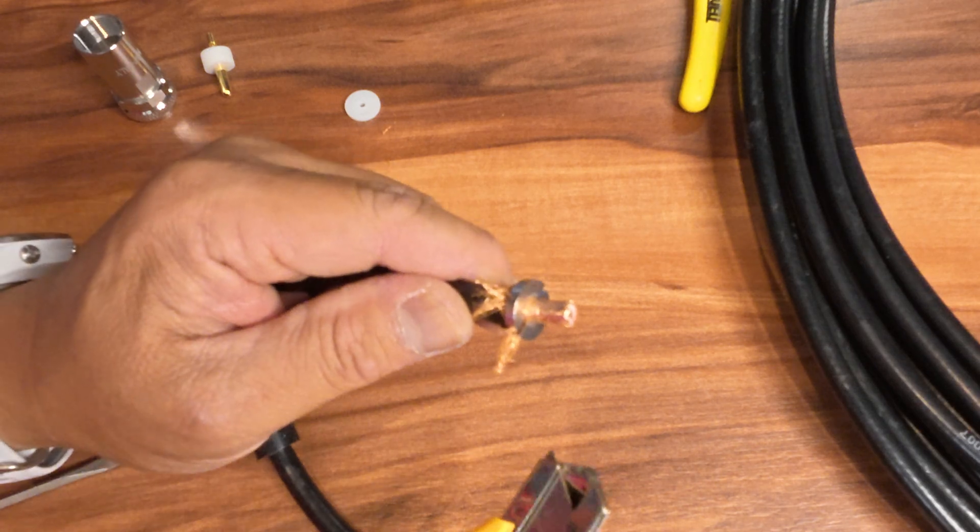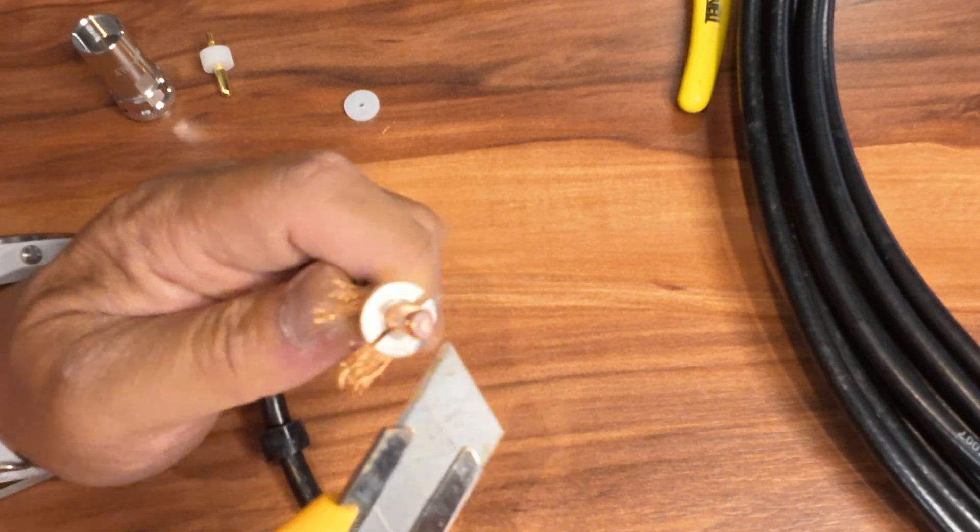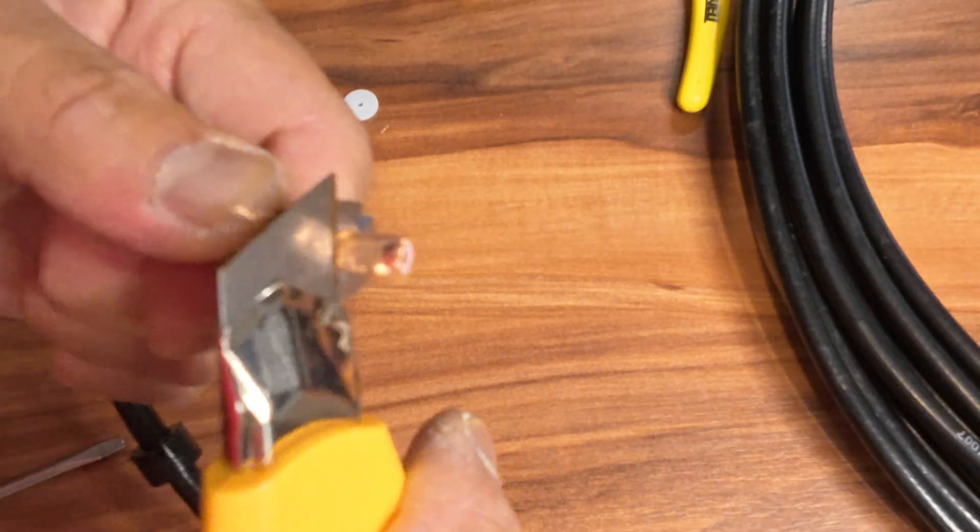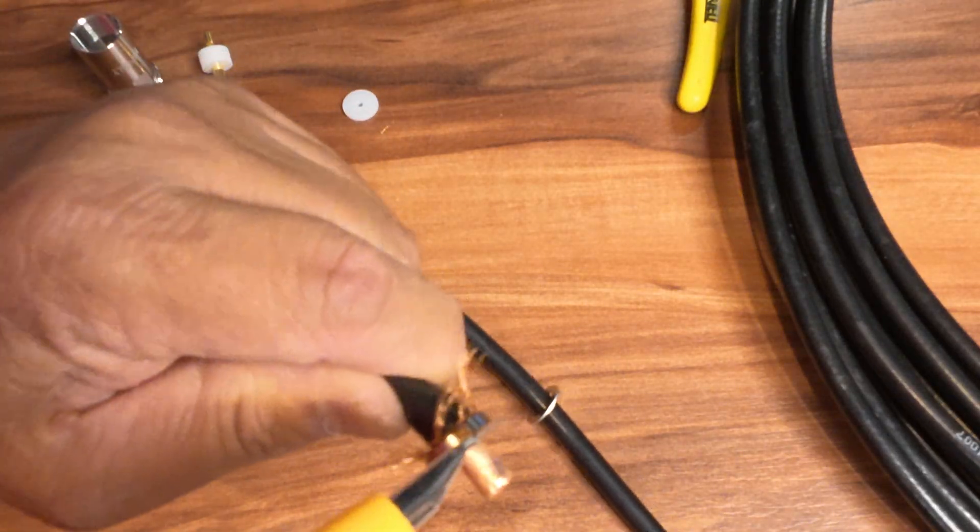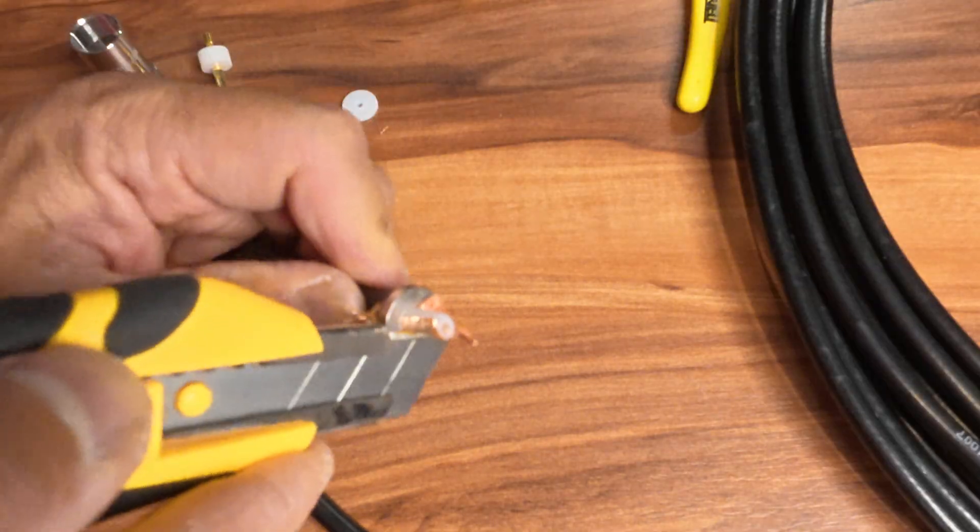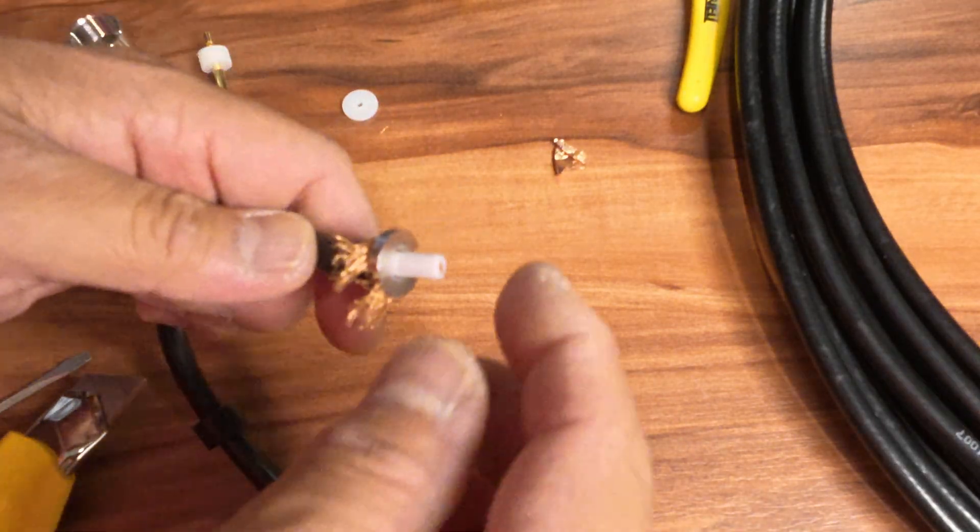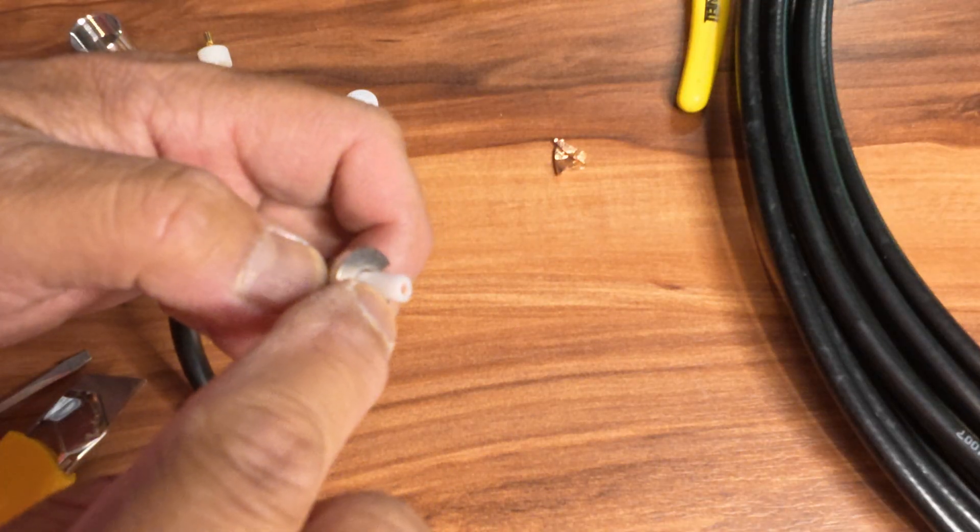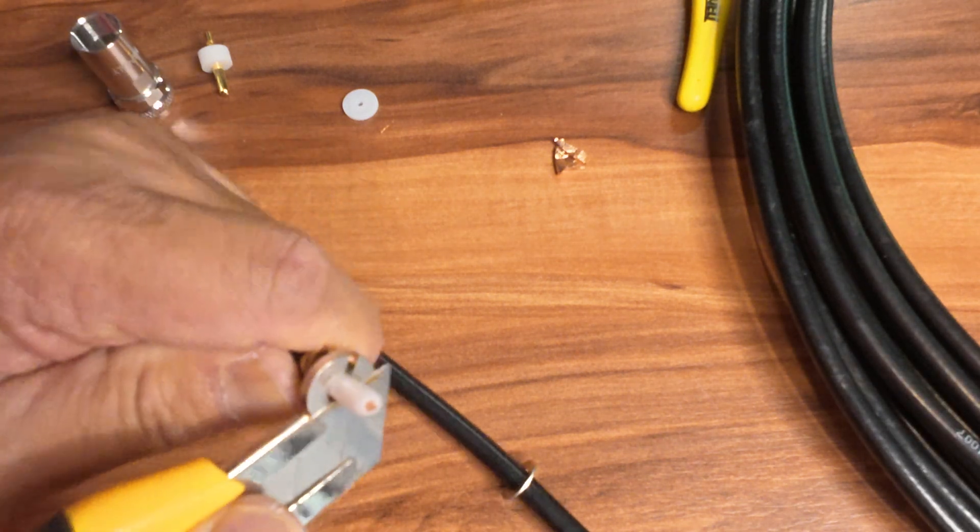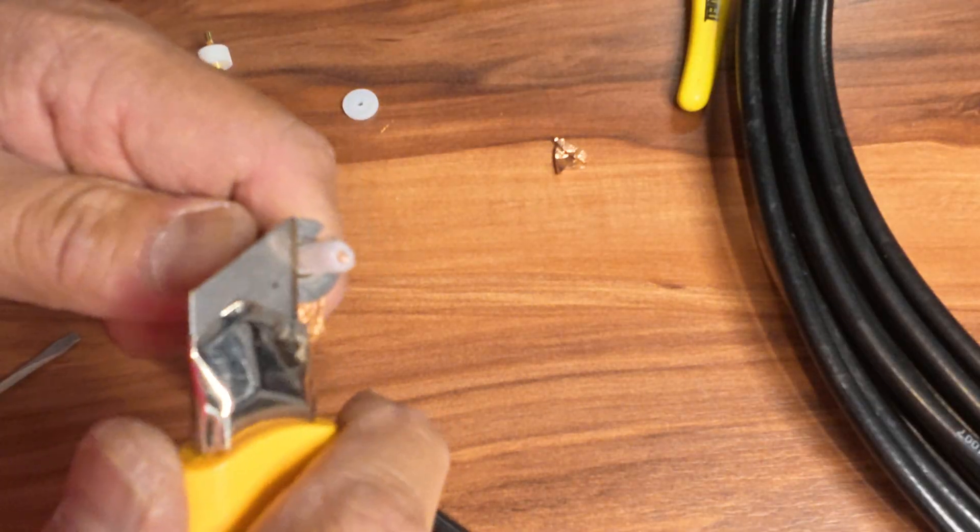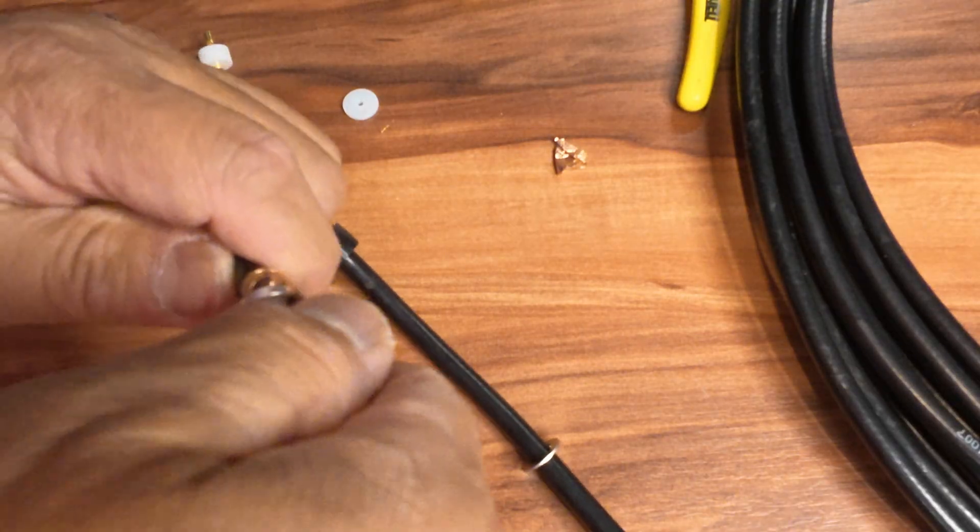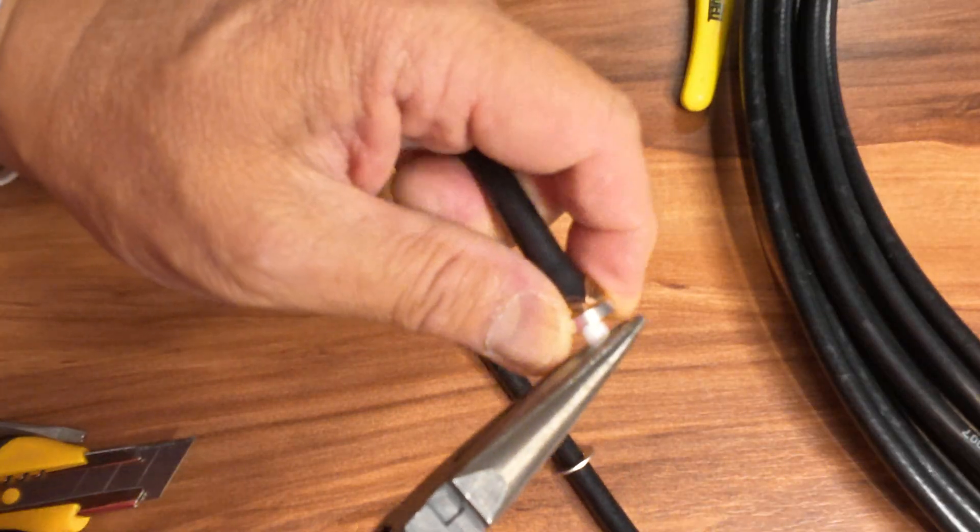All right the next thing we're going to do is remove that copper foil. Again I'm going to just score it. And now we're going to remove the inner insulator. Again by scoring. I got a help of some pliers here to remove that.